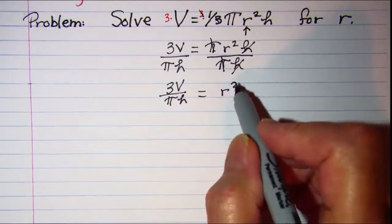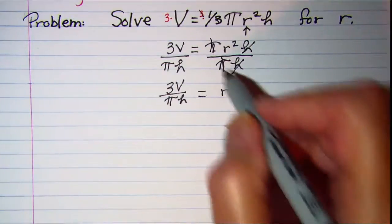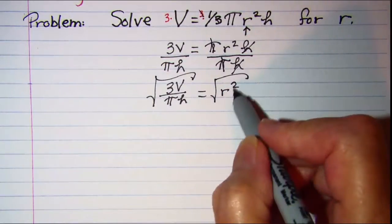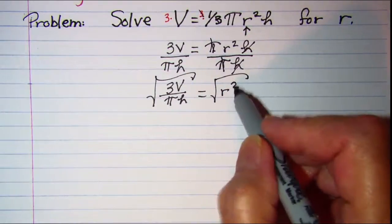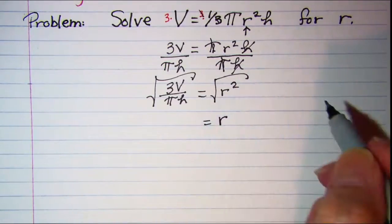My next step is to remove this exponent. Since it's squared I'll need to square root both sides. The square root and the square are inverse operations, and I have just r on the right side.